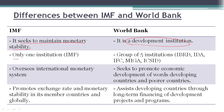IMF is only one institution. The World Bank, especially if we refer to it as the World Bank Group, consists of five institutions: IBRD (International Bank for Reconstruction and Development), IDA (International Development Association), IFC (International Finance Corporation), MIGA (Multilateral Investment Guarantee Agency), and ICSID (International Centre for Settlement of Investor Disputes).